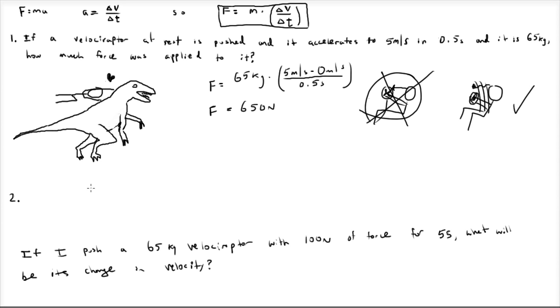I want to rearrange this equation to give it my favorite form. If we multiply both sides by change in time, and we divide both sides by mass, we solve for change in velocity. That means change in velocity is force times change in time over mass.